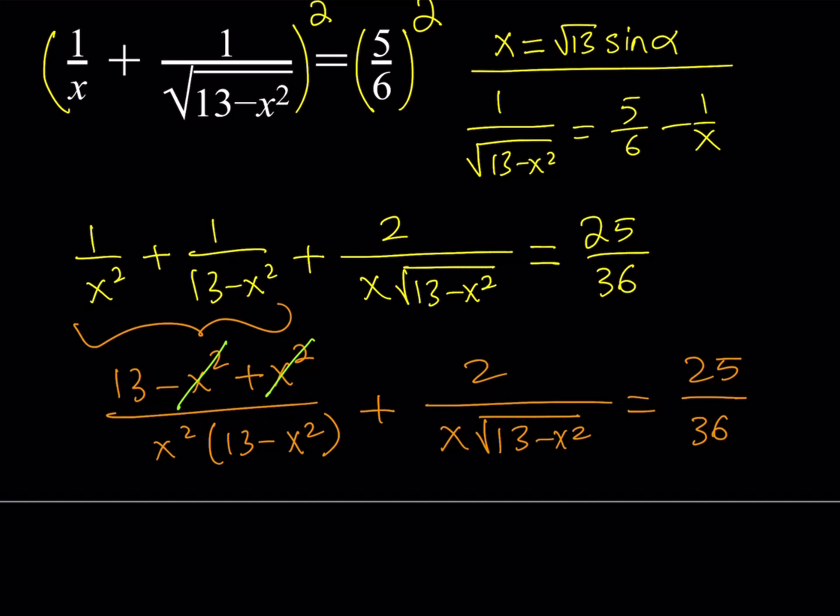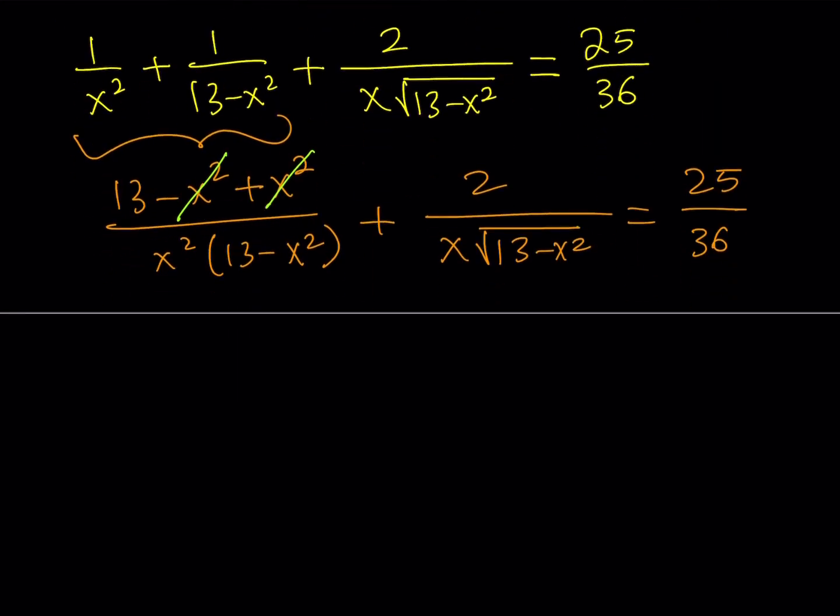How are we going to use that? Well, I'm going to call this one over x times the square root of 13 minus x squared. I'm going to call that something. Let's call that u. And then from here, we get 13u squared, don't we? Okay. So this implies 13u squared plus 2u. Okay. We've got to say that again, right? Equals 25 over 36.